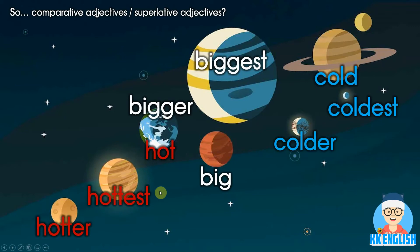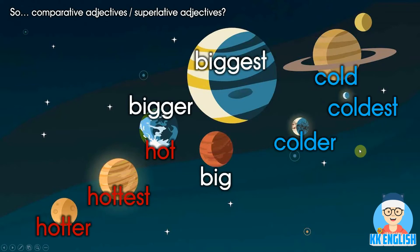Cold. Colder. Coldest. Venus is the hottest, Saturn is cold, Uranus is colder, Neptune is the coldest. So these are the words we have learnt in the previous lesson. Comparative adjectives mean you put '-er' at the back of the adjective — it means 'more' of that quality.